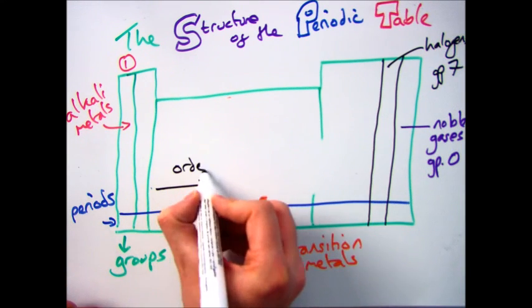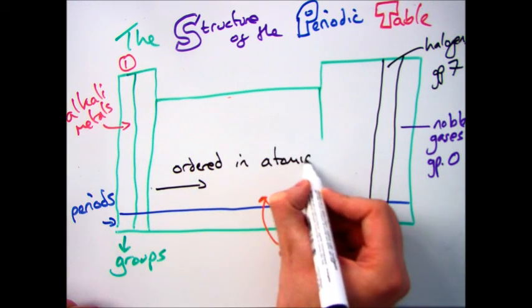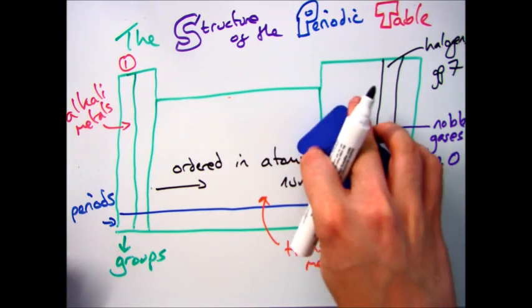And finally, all the elements are arranged in order of atomic number, with the metals on the left of the zigzag and the non-metals on the right.